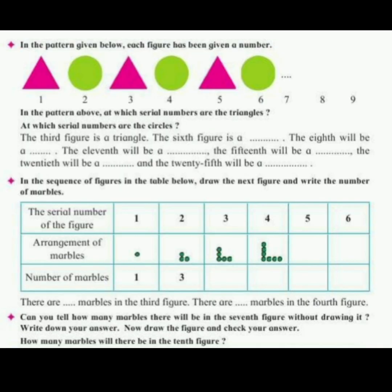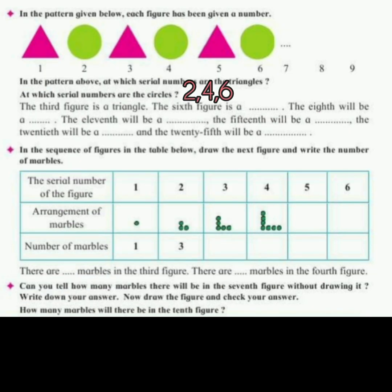In the pattern given below, each figure has been given a number. In the pattern above, at which serial numbers are the triangles? The triangles are at serial numbers 1, 3, 5. At which serial number are the circles? The circles are at serial numbers 2, 4, 6. The third figure is a triangle, the sixth figure is a circle.